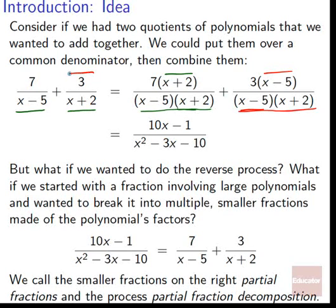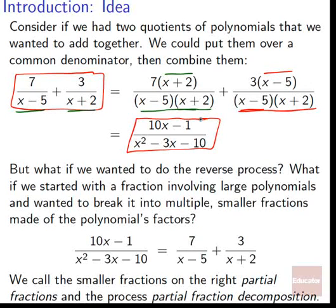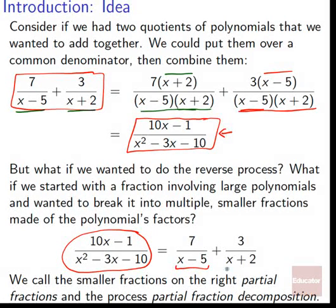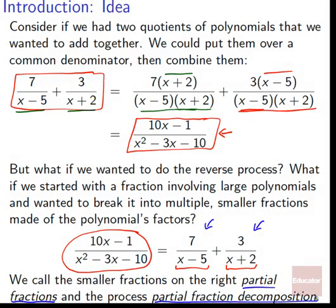We can get from the two separate fractions to the combined form by putting them over a common denominator and adding. But what if we wanted to do the reverse process — starting with a fraction involving large polynomials and breaking it into smaller fractions made of the polynomial's factors? We call the smaller fractions partial fractions, because they are parts of that larger fraction. The process to break it up is called partial fraction decomposition.